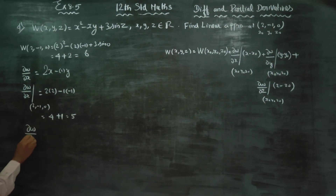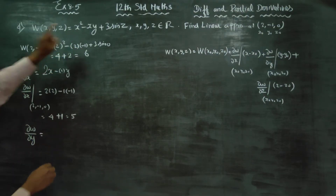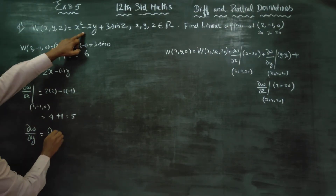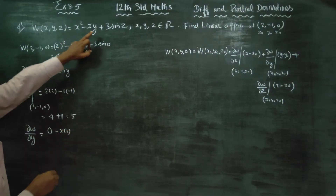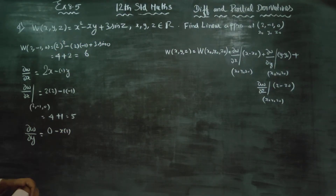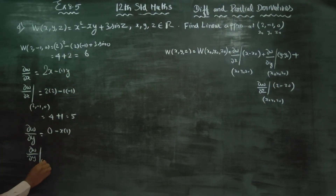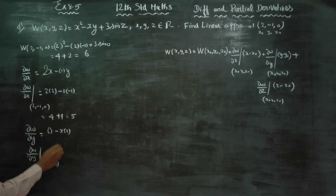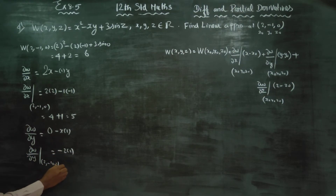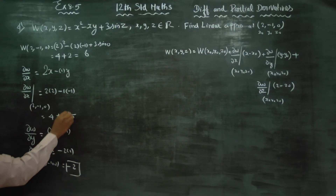After that, ∂W/∂y: differentiating with respect to y, y differentiates to 1, giving the coefficient. ∂W/∂y at the point (2, minus 1, 0): substitute x as 2. The result is minus 2 into 1, answer is minus 2.